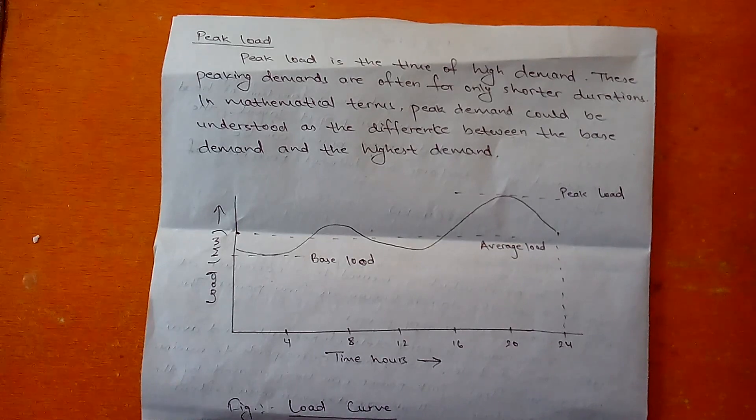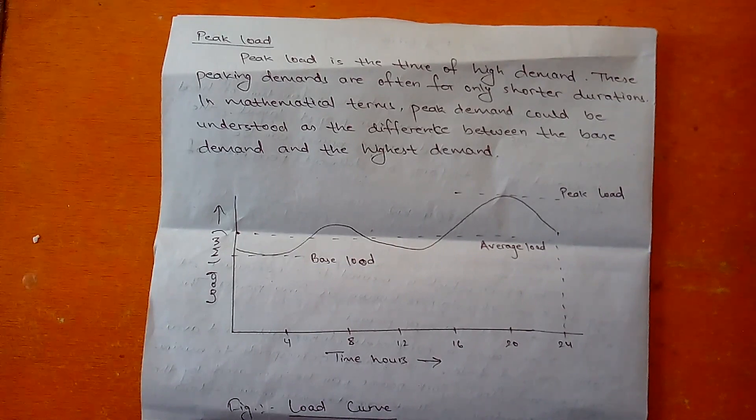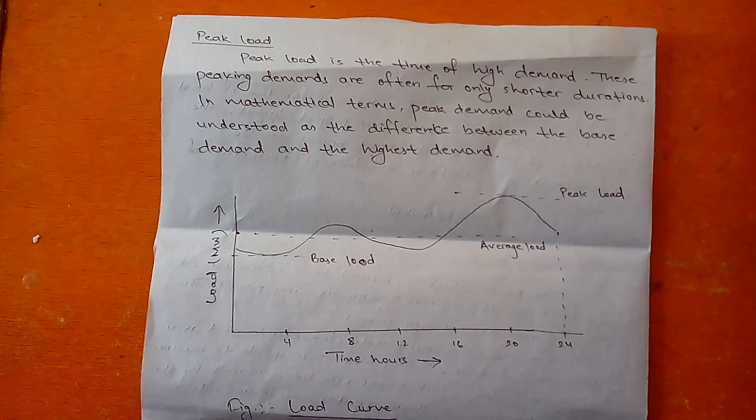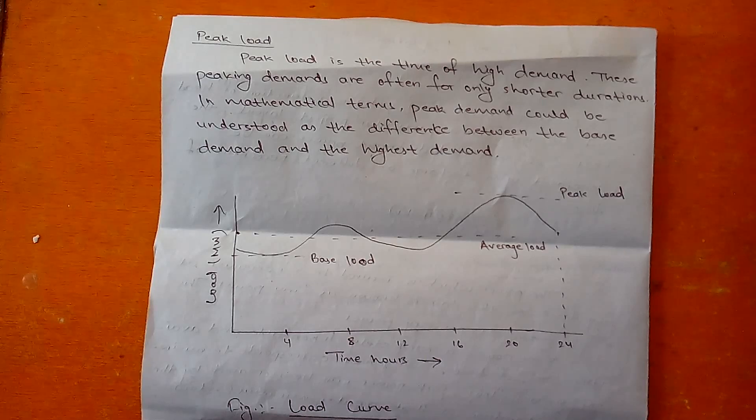In the picture on the screen, you can see a graph. On the y-axis we have load or power in megawatt, and on the x-axis we have time in hours, 24 hours, which means a day. Since the need for electricity is not constant throughout the day, it varies according to the situation.